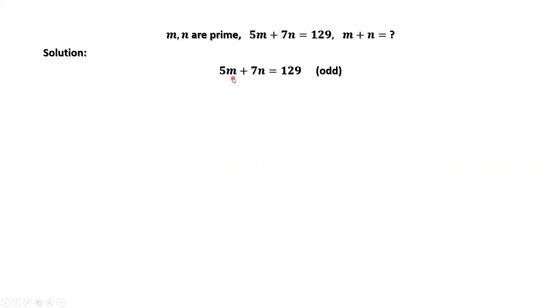This is the given condition. 129 is an odd number. 5 is an odd number. 7 is an odd number. Both m and n are prime numbers. Therefore, we have the following result: one of m and n must be the even prime number 2.